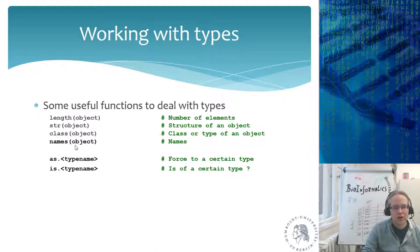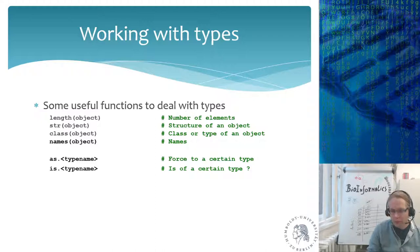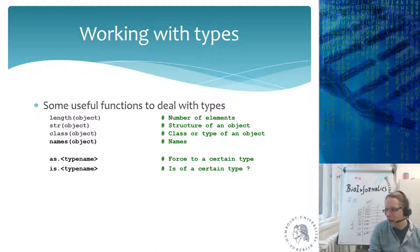You can force things to be of a certain type using as — for example as.logical or as.numeric. When you force type conversion there's a chance values become NaN (not a number) or NA for missing. You can also test if something is of a certain type using is.logical, is.numeric, and is.character, which allow you to test what type an object contains.